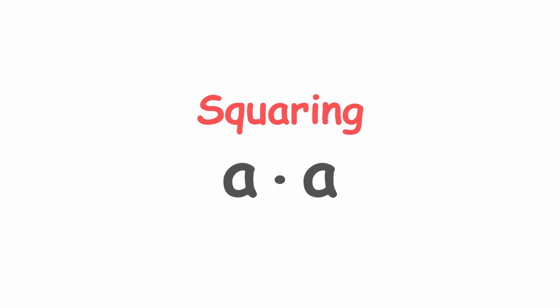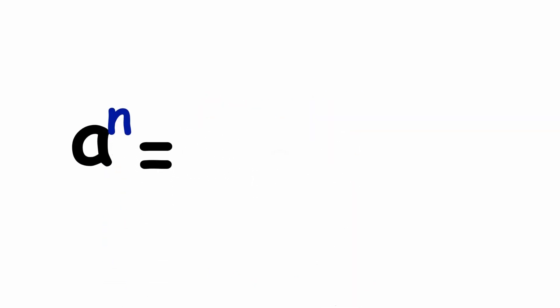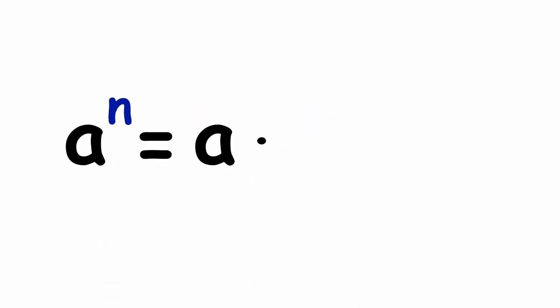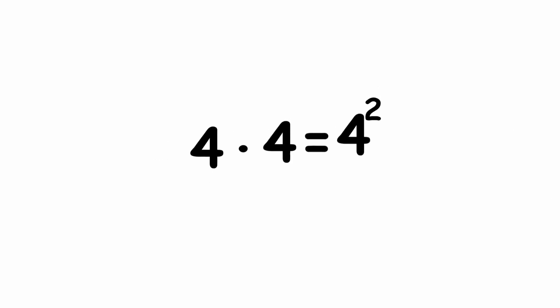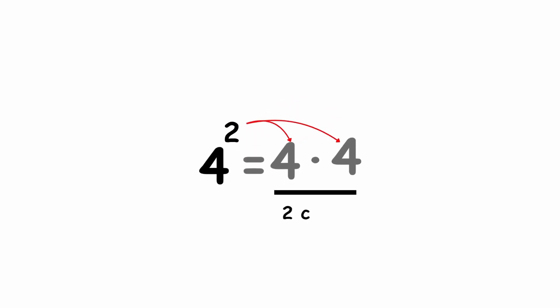Multiplying a number by itself is called squaring, which is a special case of exponentiation — multiplying a number with copies of itself some number of times. We can write 4 times 4 as 4 squared, with the 2 in superscript. This just means multiply 2 copies of 4 together.